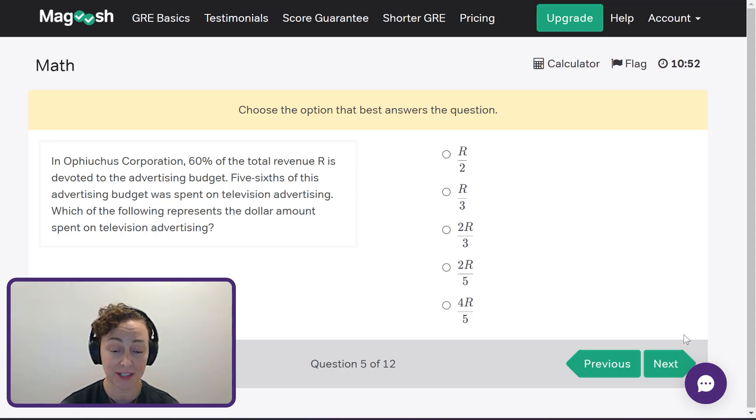I'm going to go to the answer choices. Remember I set R equal to 100. So now I can just go through this. A is looking pretty good. That's 100 divided by two. That's most definitely 50. But because I used this technique of plugging in values, I just got to quickly check the rest of them. B is 100 over three, not 50. C, that's 200 over three, not 50. Then I've got 200 divided by five and 400 divided by five. Neither of those is 50. So I very confidently can select answer choice A. Love plugging in.